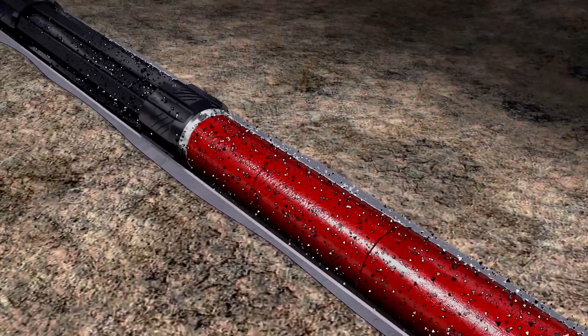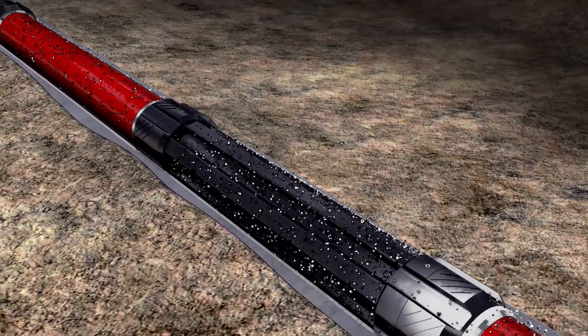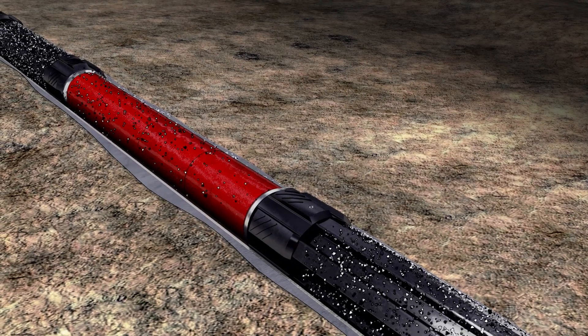This robust scraper includes a non-rotating centralizer and sprung blades that freely rotate on the scraper's body to reduce the risk of casing wear and provides 360-degree scraping coverage, regardless of well inclination.